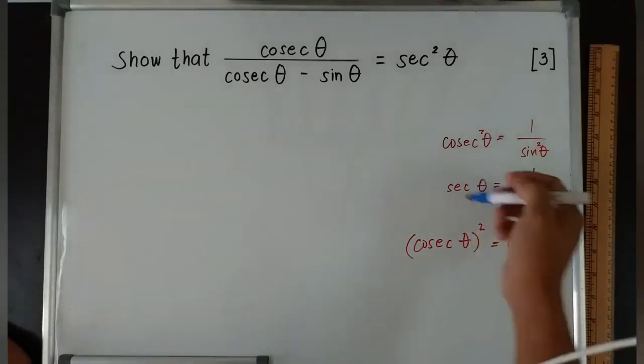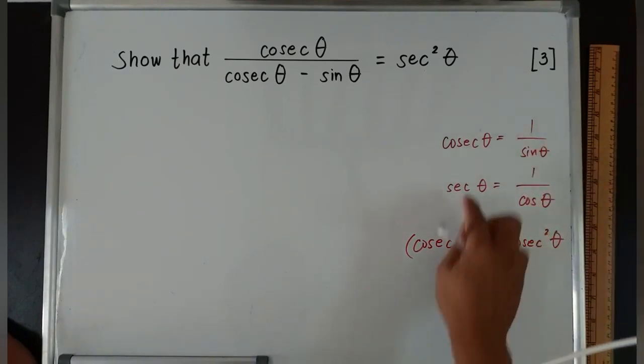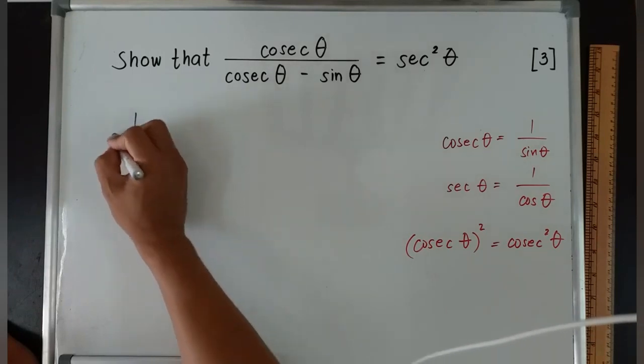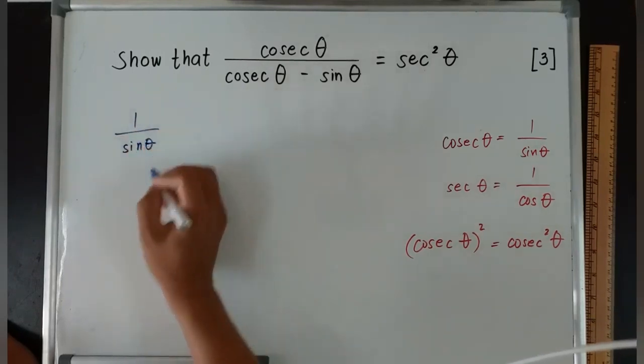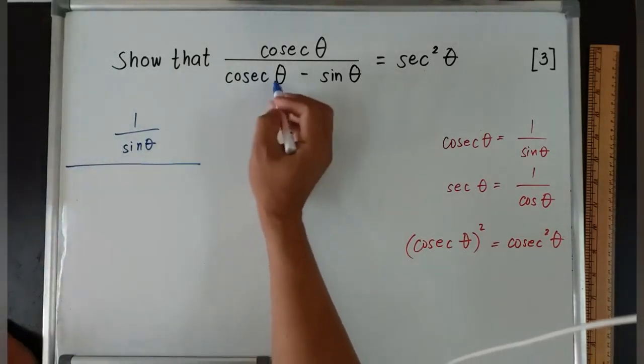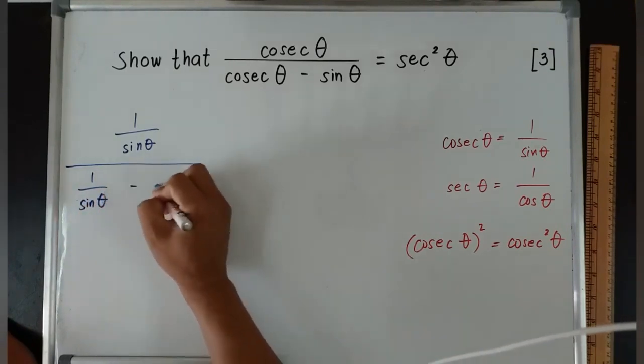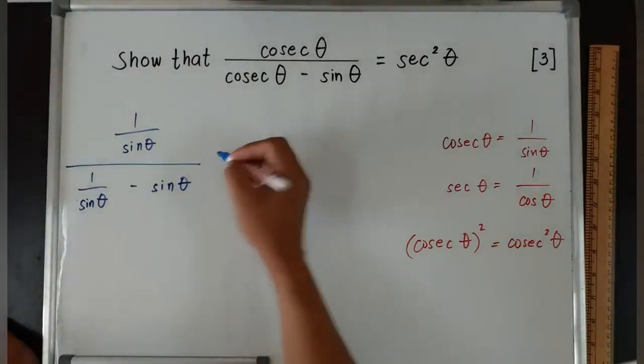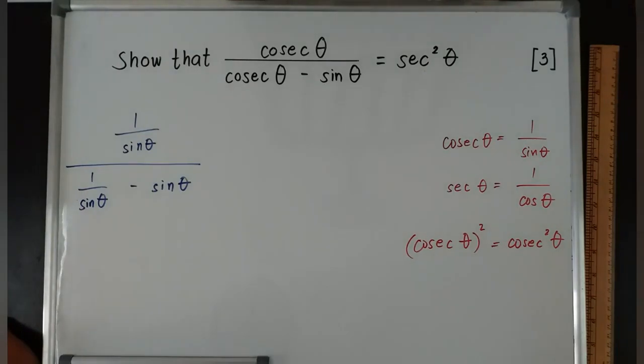Basically, I'll use these rules. If there's no square, cosecant is equivalent to 1/sin θ. So 1/sin θ over... I'll change this one also to 1/sin θ, so 1/sin θ minus sin θ.